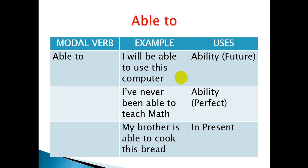For ability in the perfect, use 'have/has been able to' — for example: 'I've never been able to teach math.' For present ability: 'My brother is able to cook this bread.' You can also replace it with 'can': 'My brother can cook this bread.'